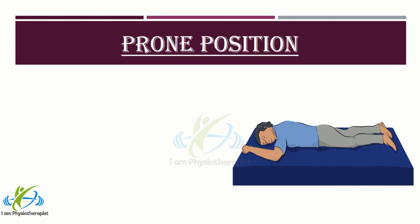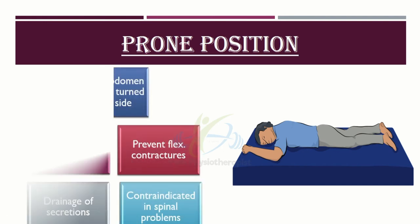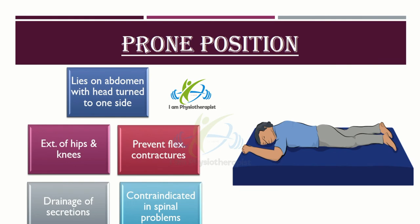Prone position: the patient lies on the abdomen with head turned to one side, and the hips are not flexed. Prone position is the only bed position that allows full extension of the hip and knee joints, and it helps prevent flexion contractures of the hips and knees. It also promotes drainage from the mouth and is useful for clients who are unconscious or recovering from surgery of the mouth or throat. However, prone position produces marked lordosis or forward curvature of the spine, so it is contraindicated for patients with spinal problems.